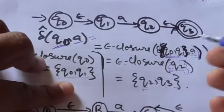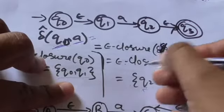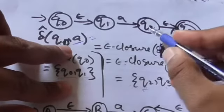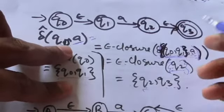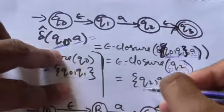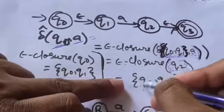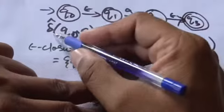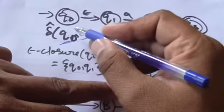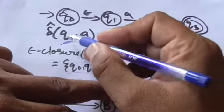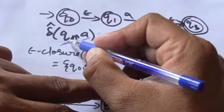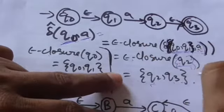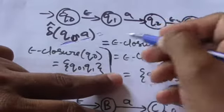Now find the empty closure of q2. ε-closure(q2) contains two states: q2 and q3. So the output of the extended transition function for present state q0 and input symbol a will be a set of two states, {q2, q3}.